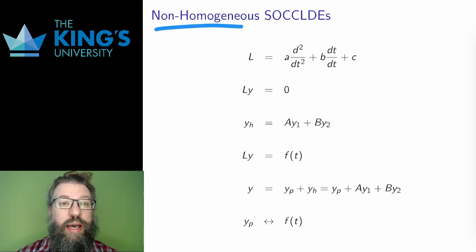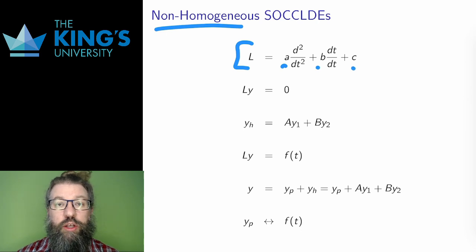Let me recap. This is the linear operator for a second-order constant coefficient linear differential equation. A, B, and C are constants, and all those constants are positive if I want to interpret this as harmonic motion. The homogeneous system is Ly equals zero.